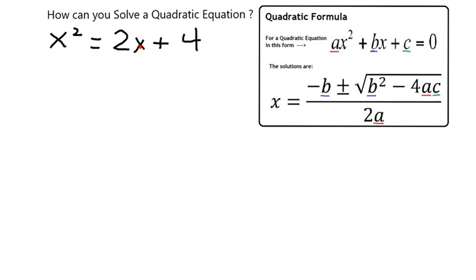Which means that I'm going to need to get the 2x and the 4 to the other side of the equation by subtracting them from both sides.